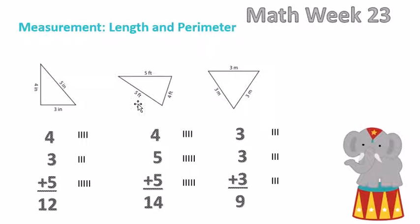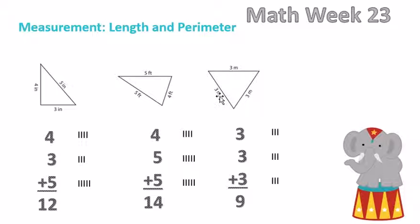This triangle measures four feet, five feet, and another five feet across the top. We do the same thing — add each of the sides to get the entire perimeter. Four plus five plus five equals fourteen feet, so the perimeter of this triangle is fourteen feet.